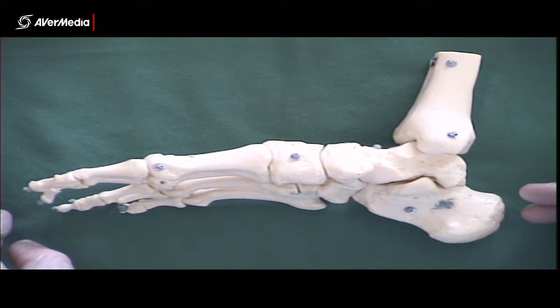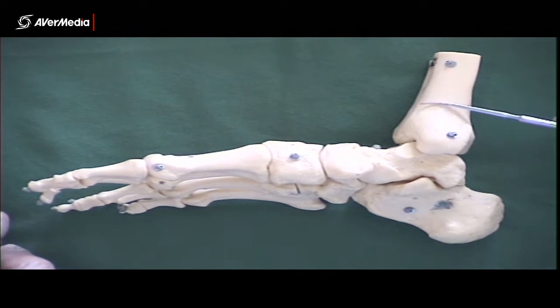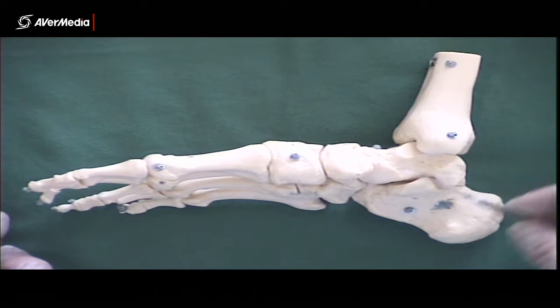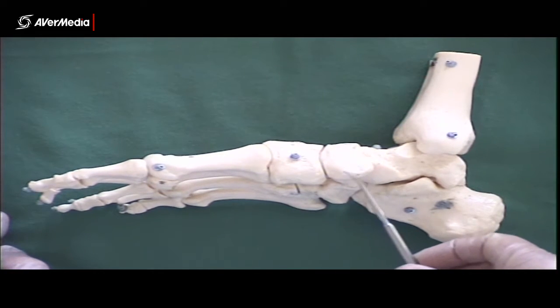So again, we're looking at a right skeletal foot, this time from a medial point of view. We can see the tibia, calcaneus, talus, and then the navicular with the navicular tuberosity.